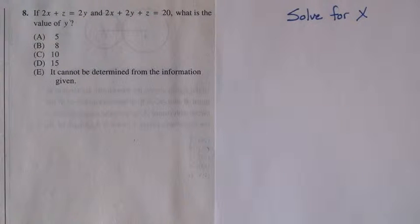Whenever you see a problem like this where you have more variables than you do equations, here we have two equations and three variables x, y, and z, and you're solving for the value of one of the variables, in this case y, you really want to quickly think about setting up a system of linear equations and seeing if you can cancel out some of these variables.